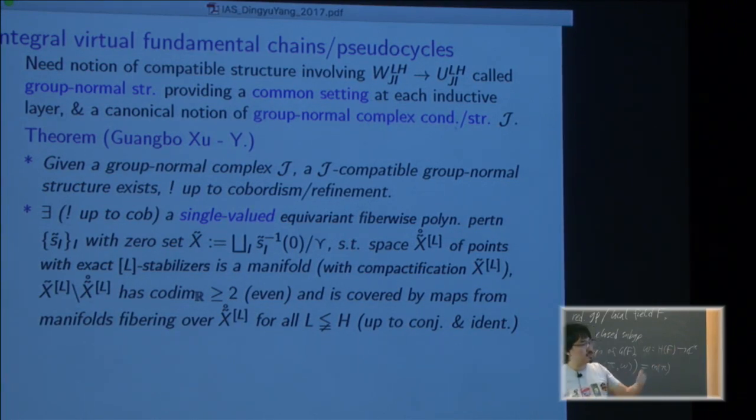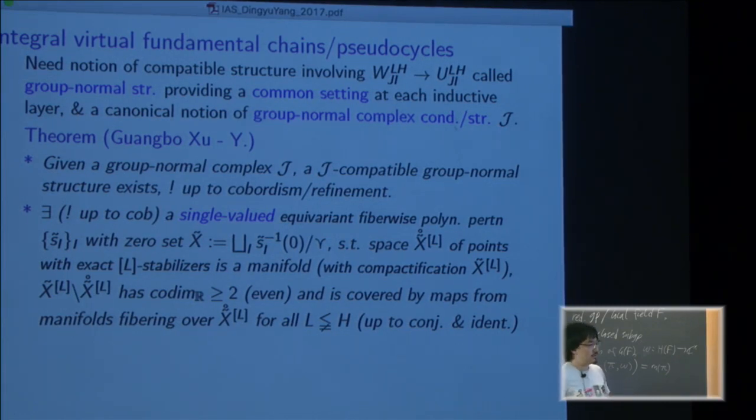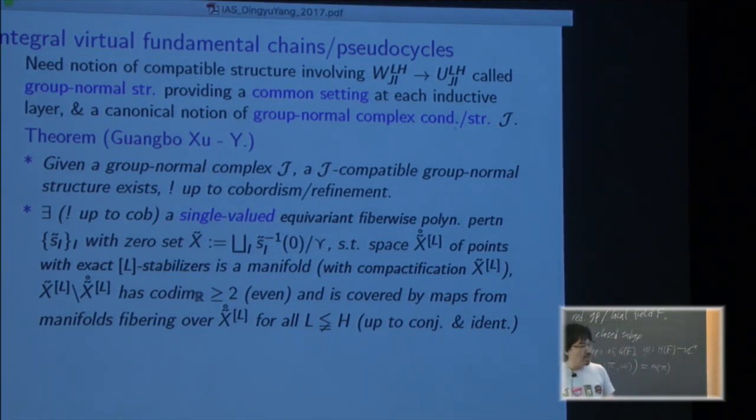Such that the perturbed zero set X tilde has such stratification properties. The exact stabilizer L part, denoted by X tilde open to the power of L, and that's a manifold and that has a compactification which is just the fixed part. And the difference is codimension 2 in real and it can be covered by maps from manifolds which fiber over the previous bigger groups. So it's a kind of nice stratification.